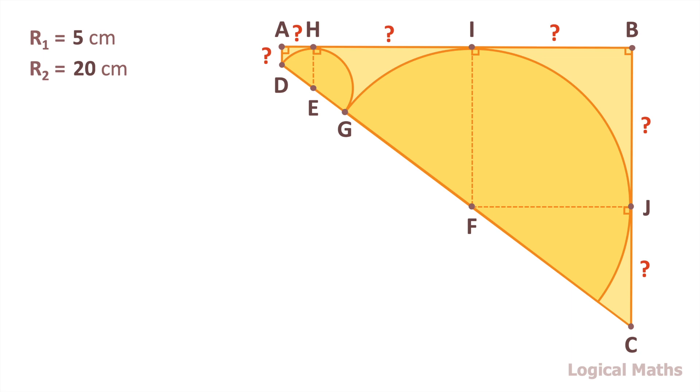In quadrilateral IBJF, IF and FJ are radiuses of the large semicircle. So their length is 20 cm. Three angles are right, so the fourth angle is also right. From this, we conclude that IBJF is a square, so all the sides are equal.